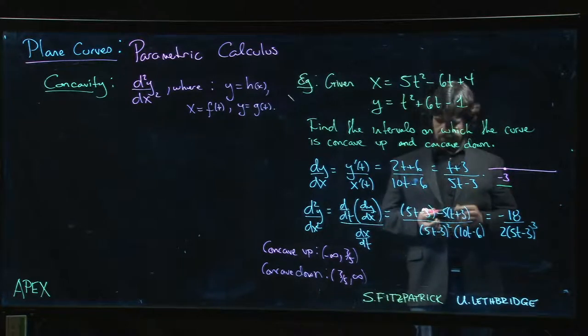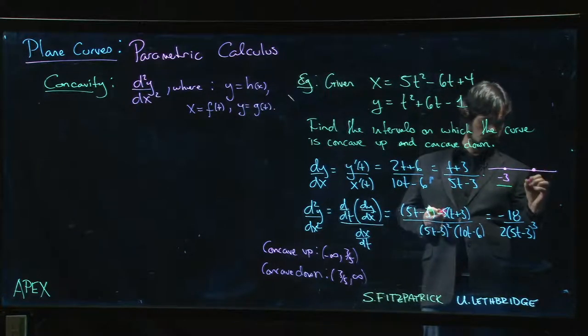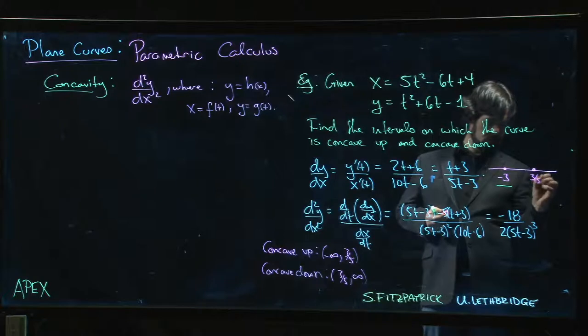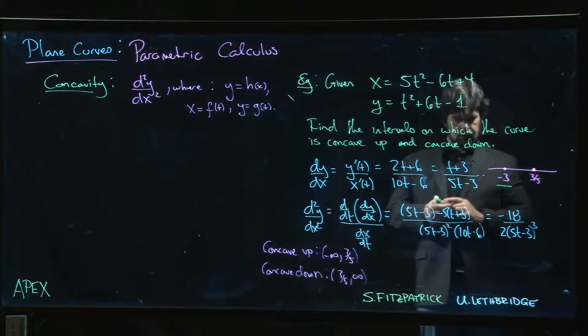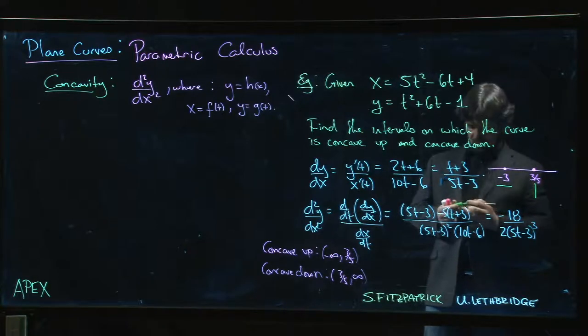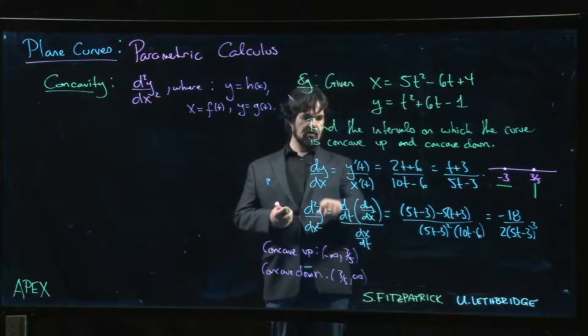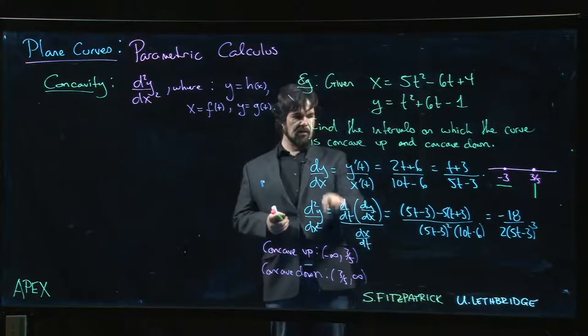We have a horizontal tangent there. At t = 3/5, we have a vertical tangent. But the other thing I can do here is I can figure out the sign of dy/dx on the intervening intervals.